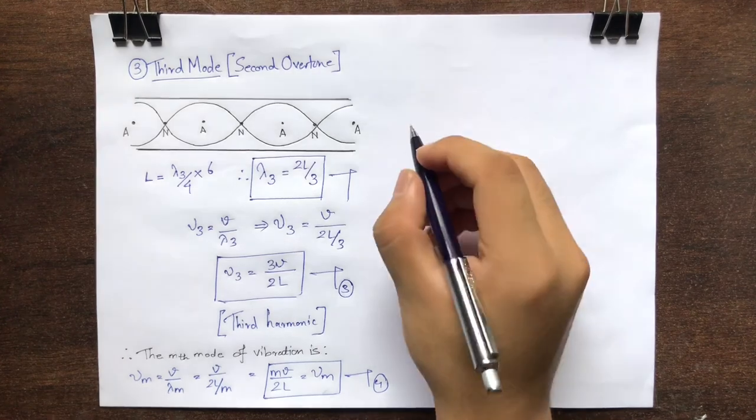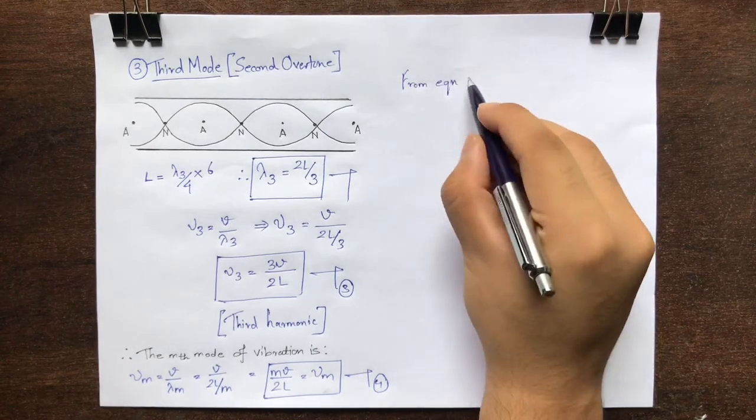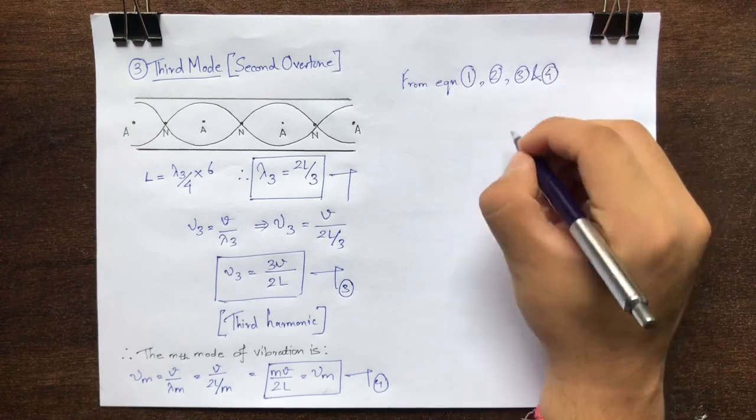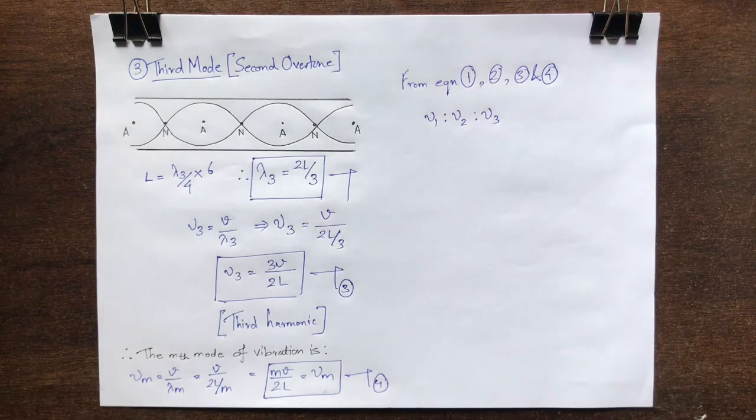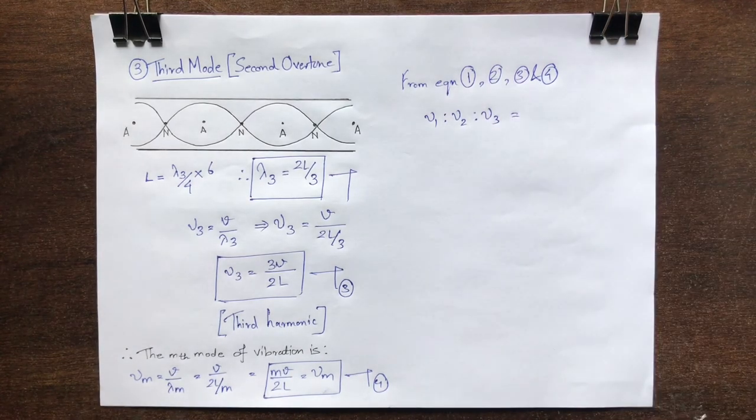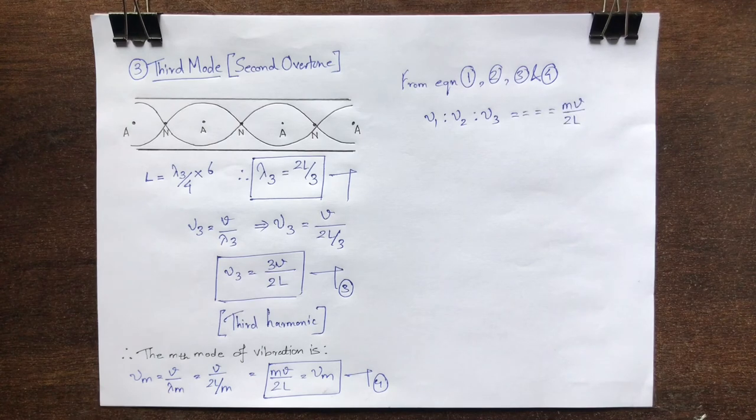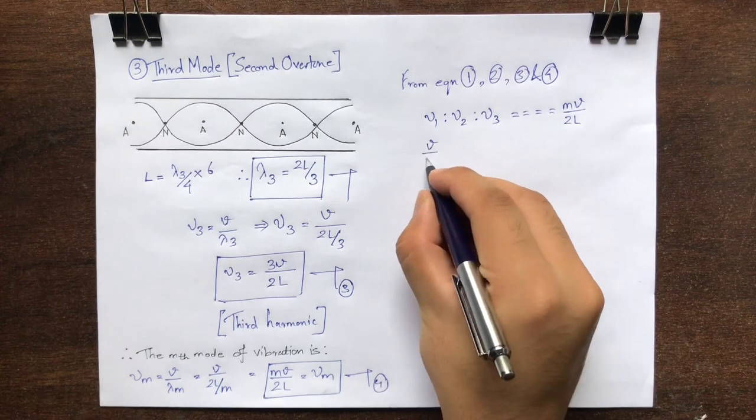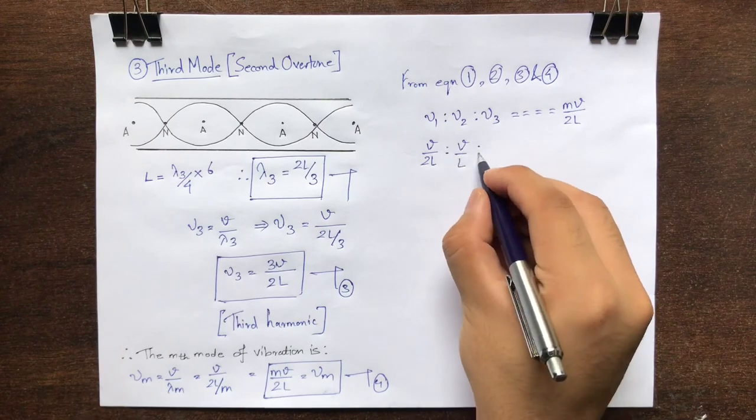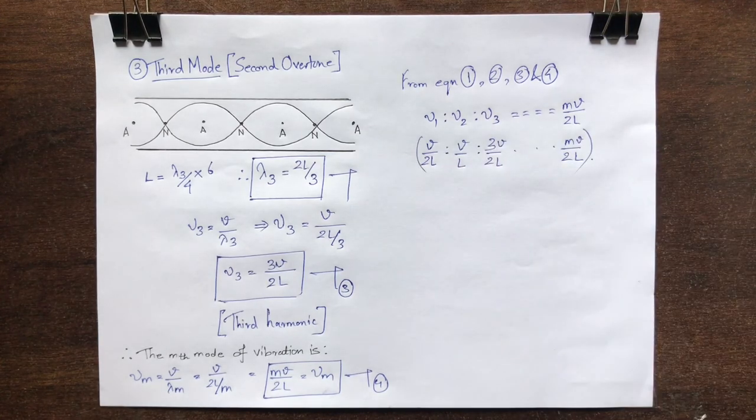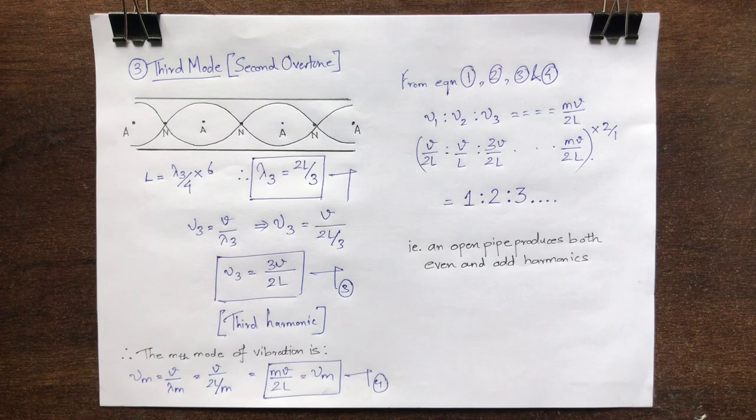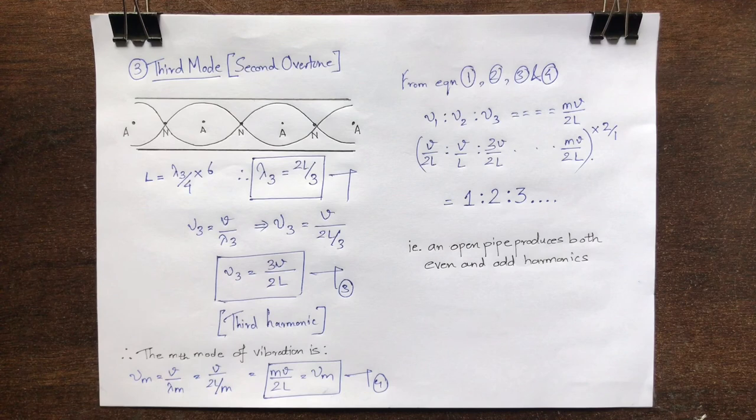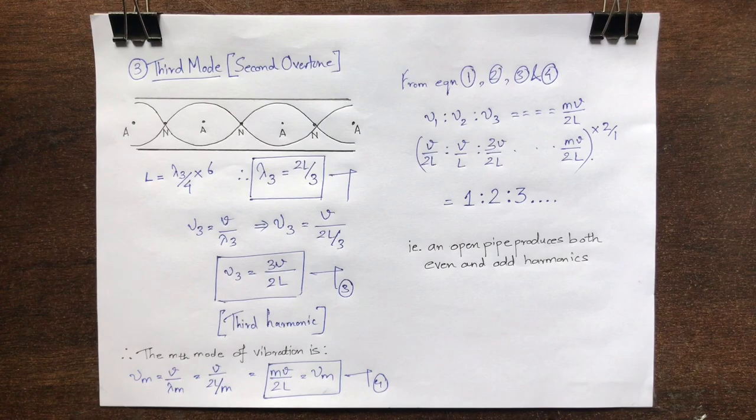From this calculation, it is clear that the frequencies of the fundamental tone and the overtones of an open pipe have the following relationship: mu1 is to mu2 is to mu3 and so on, as v/2L to 2v/2L to 3v/2L. From equations 1 to 4, it is clear that the frequencies of an open organ pipe have the relation of 1 is to 2 is to 3 and so on. That is, an open organ pipe produces both the even and the odd harmonics.